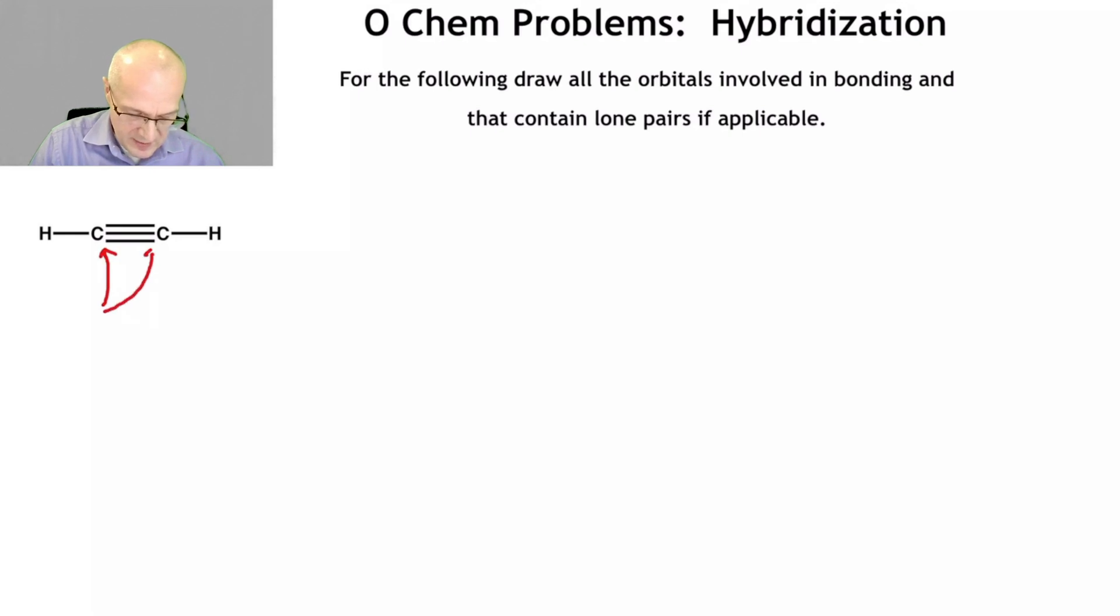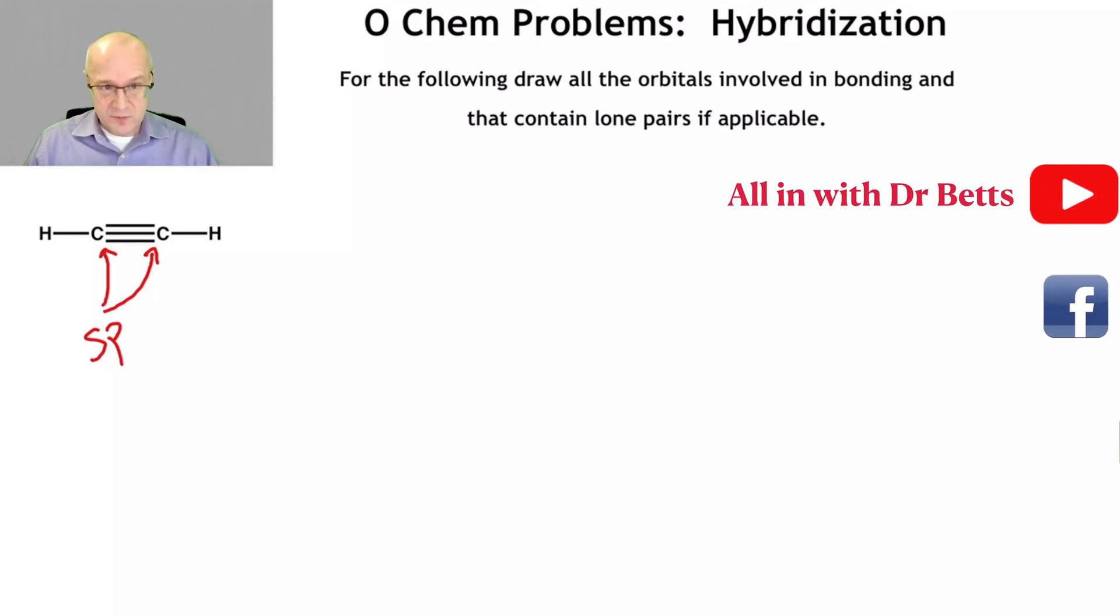That is sp. That is sp. The carbons are involved in triple bonds or alkynes. This is an alkyne. Alkenes are something different. They also have sp carbons. So the carbons have two pi bonds each, so we have to draw them. Here's how we do it.